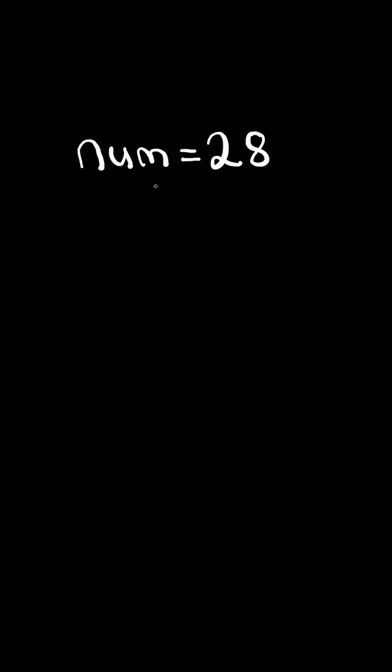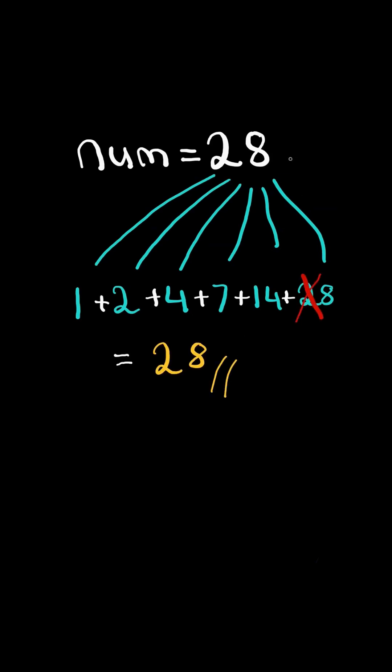Perfect number. Given a positive number, consider all of its divisors. If the sum of its divisors, excluding itself, equals the same number, then it is a perfect number.